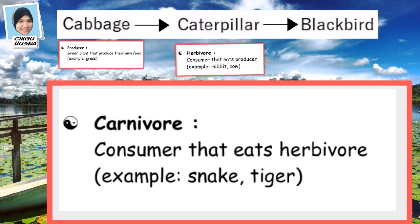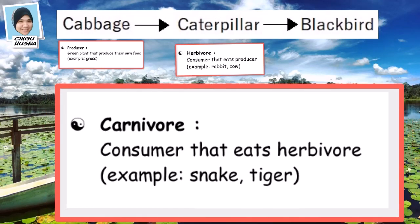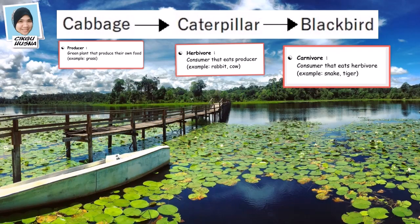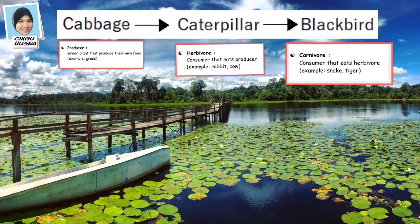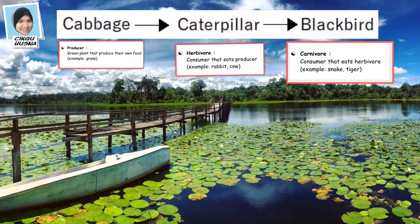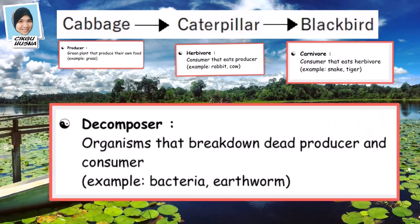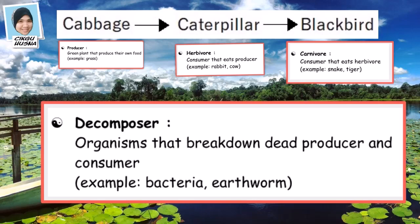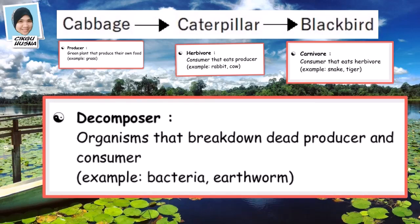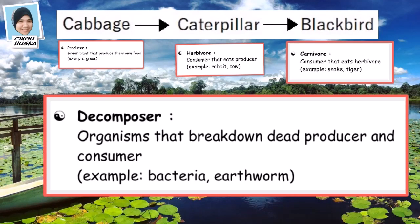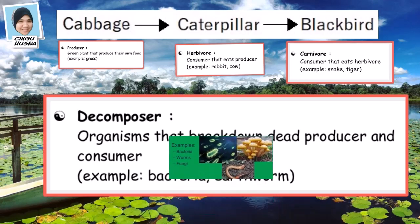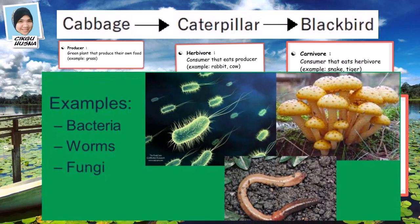Herbivores are eaten by carnivores. Carnivores are animals that eat other animals. When all these living organisms — like the cabbage, caterpillar, and blackbird — die, they become soil. They become soil because they are broken down by decomposers. Decomposers are living organisms that break down dead plants and animals to get energy; for example, bacteria, worms, and fungi.